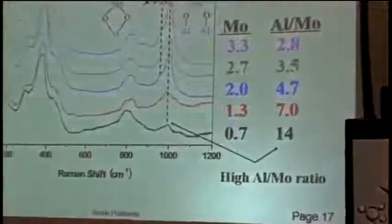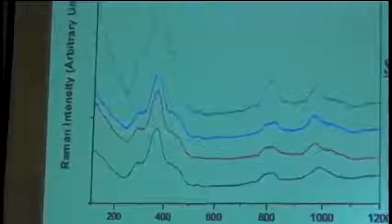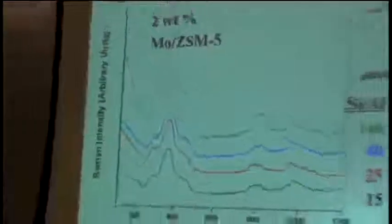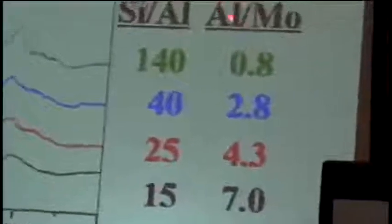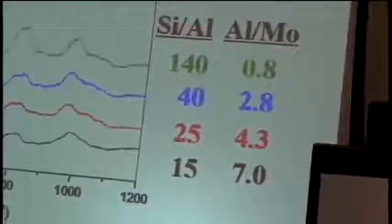So if this is true, and we've identified the right structures, and we have the right explanation for the dependence of the molybdenum structures on the molybdenum loading, it should also hold true if we reverse the experiment. In the reverse experiment, we keep the molybdenum concentration constant at two weight percent. And then we use different zeolites, varying the silica-aluminum ratio. So the silica-aluminum ratio changes, and the number of aluminum sites available for each molybdenum also changes.